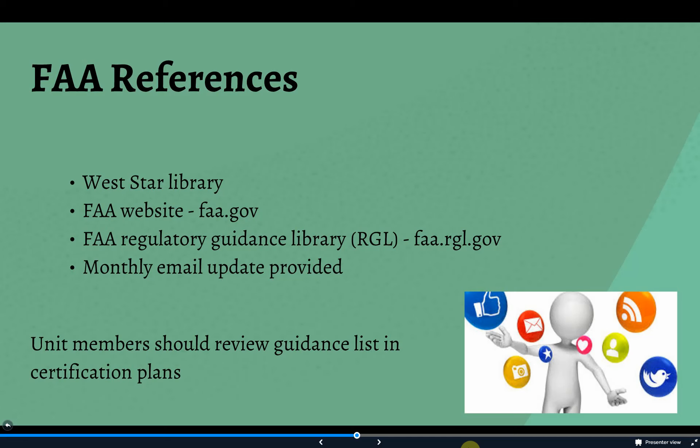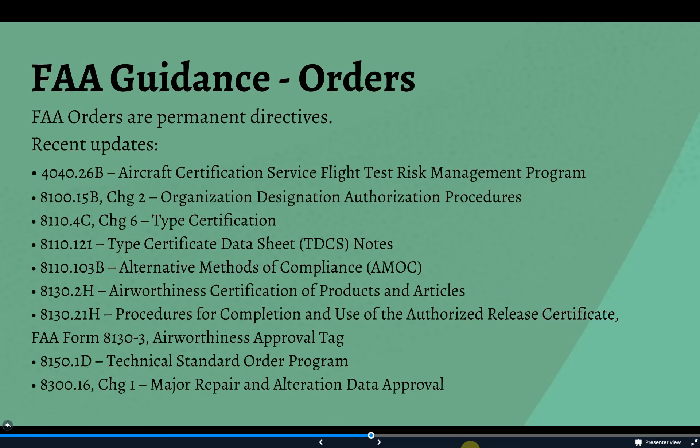Because projects need to be conducted with the most current guidance, project certification plans include a listing of relevant policy that's applicable, including revisions and dates. This provides a good source to know what's being used, as well as evidence down the road if questions are ever asked — like, how do you know you used the latest guidance on your project? When reviewing a certification plan, unit members need to spend time looking at what's listed to make sure they're up to speed and to double-check that the latest is actually listed.